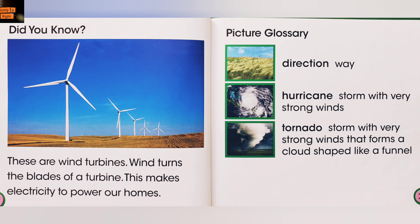Picture glossary. Direction: way. Hurricane: storm with very strong winds. Tornado: storm with strong winds that forms a cloud shaped like a funnel.